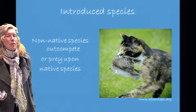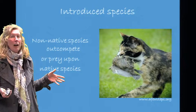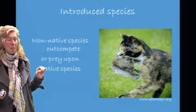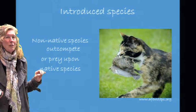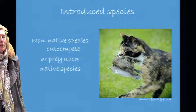Introduced species are generally non-native species which out-compete or prey upon native species. Our domestic cat, for example — the free-ranging domestic cat — in the United States alone annually kills up to 4 billion birds and up to 20 billion small mammals. This was reported in Nature in 2013.